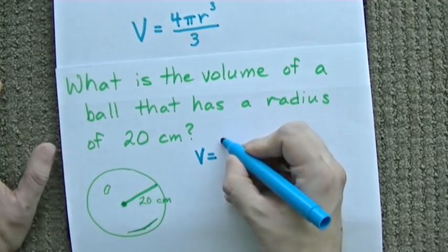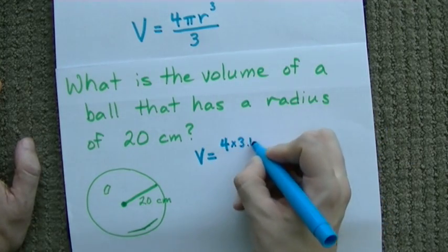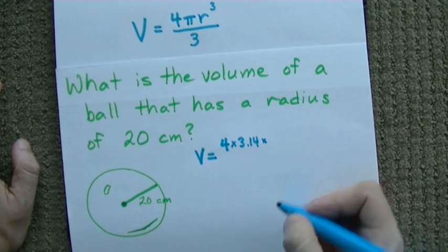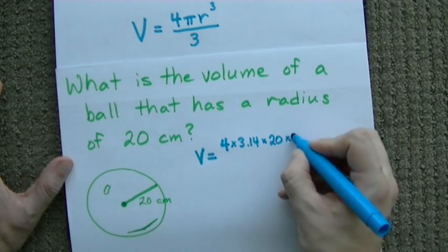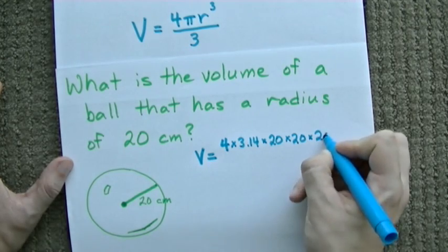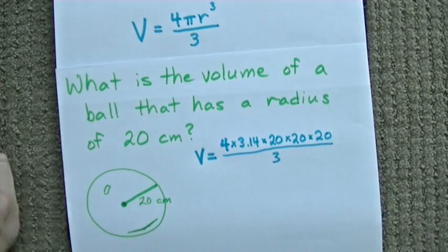We've got 4 times pi, now that's 3.14, times the radius, that's 20, 3 times. Look at that. And we divide the whole thing by 3.